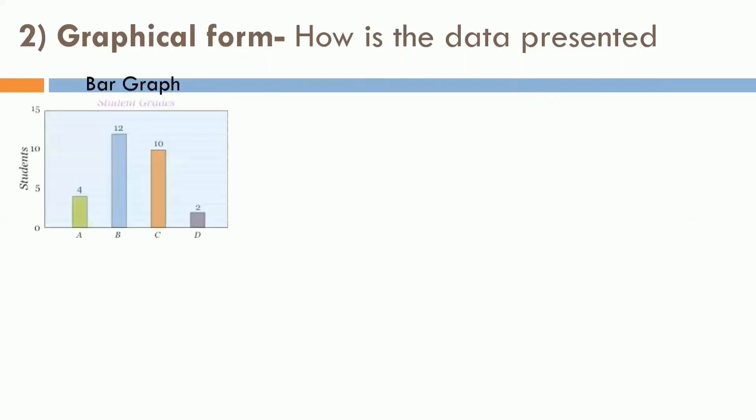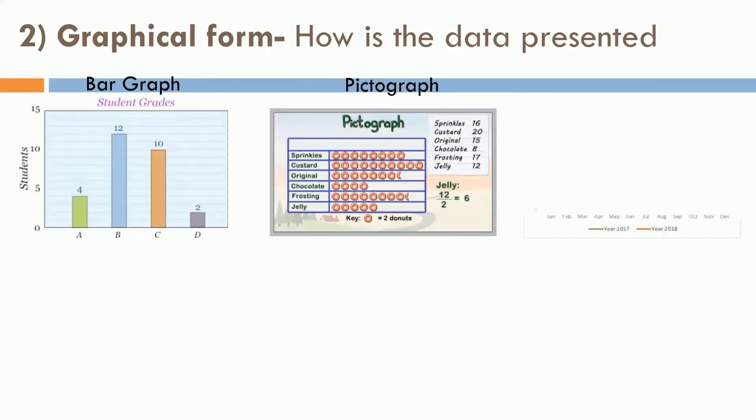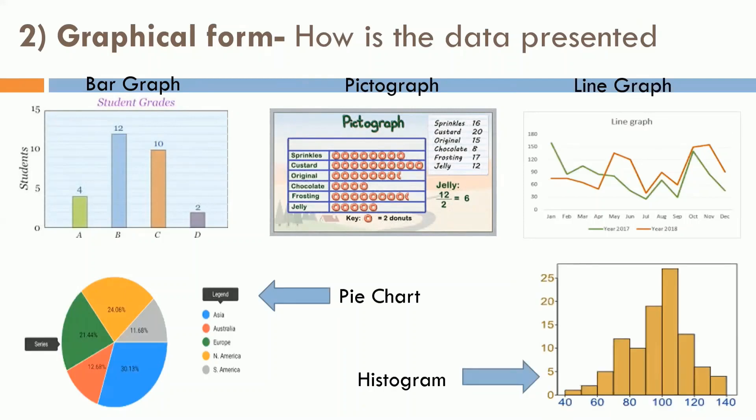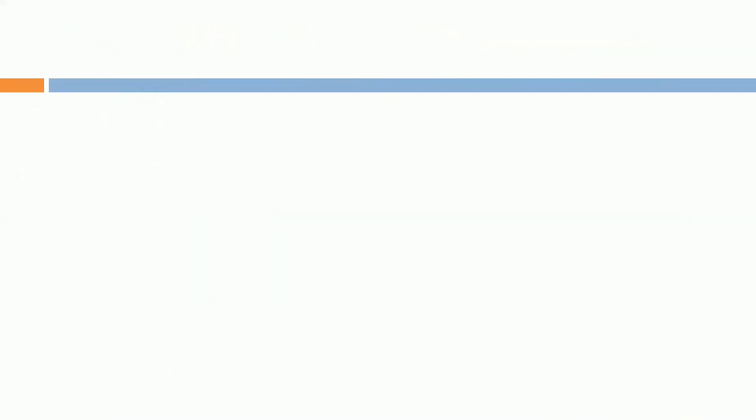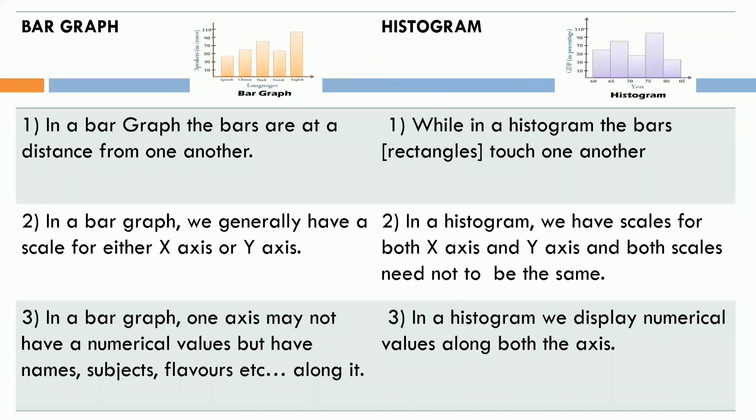Next is graphical form, how we can present the data in form of graph. It can be a bar graph, a pictograph, a line graph, a pie chart or a histogram. Let's see the difference between a bar graph and histogram. In a bar graph, the bars are at a distance from one another. In histogram, the bars touch one another.